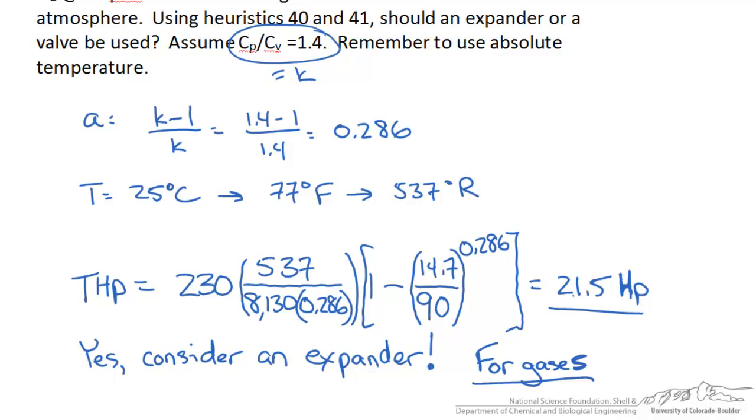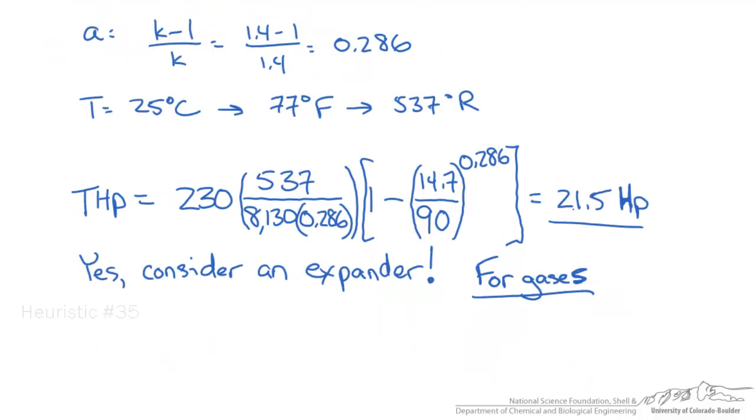We could also calculate the theoretical temperature coming out of the expander. This is in a previous heuristic, number 35, which shows us that the outgoing temperature is related to the incoming temperature and the change in pressure.